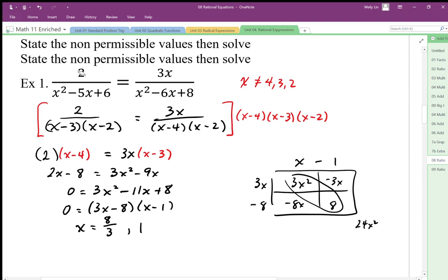It doesn't hit my restricted values. I plug these in it should work so I'm just testing here. 2 divided by 1 minus 5 plus 6, 1 minus 5 plus 6 is going to give me 2 so 2 divided by 2 is 1. Here I'm going to end up with 3 divided by 1 minus 6 plus 8 that's going to be 3 divided by 3 that's equal to 1. So the other solution will also be the same. The extraneous solutions, we don't use one of these restricted values we won't get extraneous solutions.